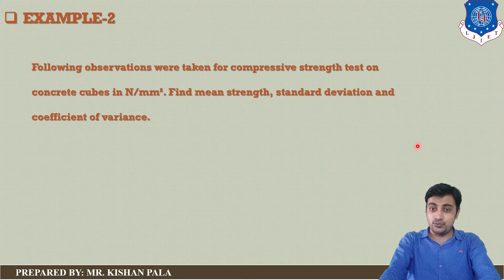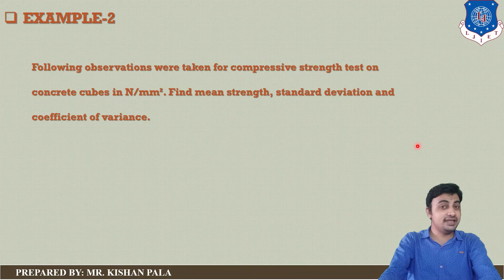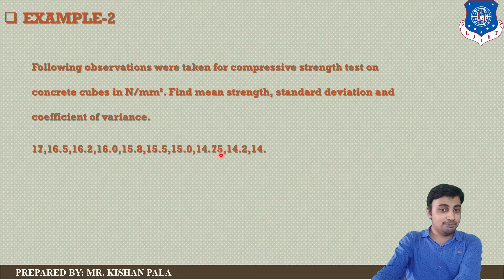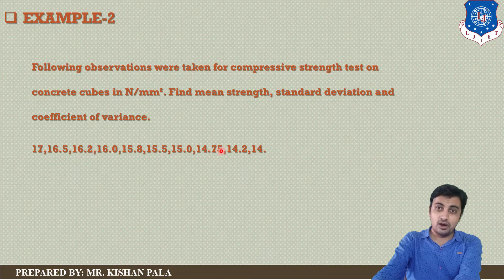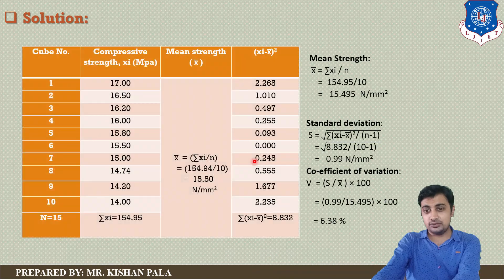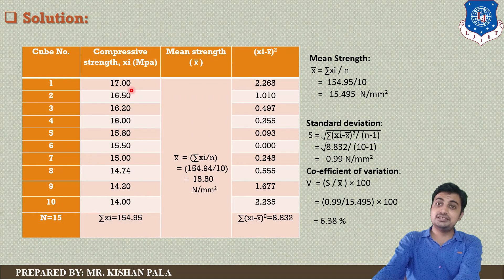The following observations were taken for the compressive strength test on concrete cubes in Newton per mm². Find the mean strength, standard deviation, and coefficient of variance. The compressive strength values are: 17, 16.5, 16.2, 16, 15.8, 15.5, 15, 14.75, 14.2, and 14. These 10 values are presented in a table on screen.